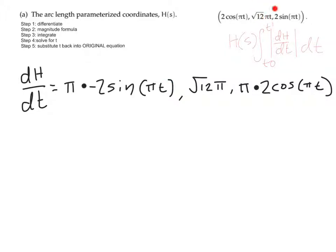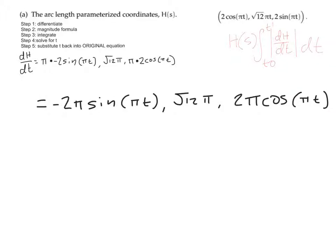For 2sin(πt), we apply the chain rule again: differentiate inside the bracket to get π, multiplied by the derivative of 2sin, which is 2cos, keeping πt inside. Multiplying out: π × minus 2sin(πt) becomes −2π·sin(πt); √12·π stays as √12·π; and π × 2cos(πt) becomes 2π·cos(πt). That completes step 1, the differentiation.